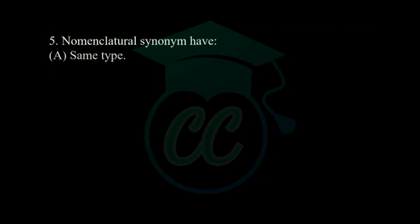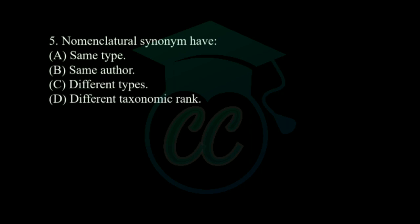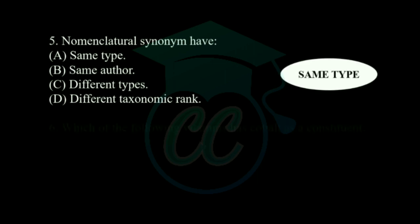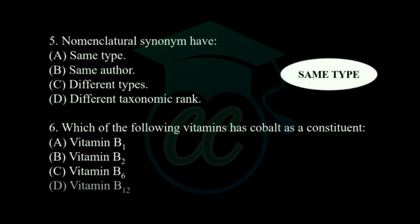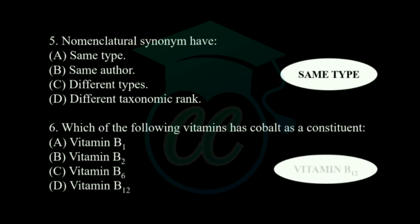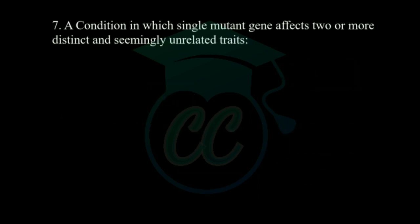Next question: nomenclature synonyms have — options: same type, same order, different types, different taxonomic rank. The answer is nomenclature synonyms have the same type. Next question: which of the following vitamin has cobalt as a constituent? Options: vitamin B1, vitamin B2, vitamin B6, vitamin B12. The vitamin which has cobalt as a constituent is vitamin B12.